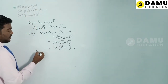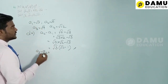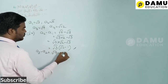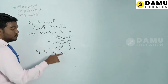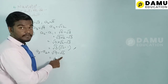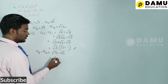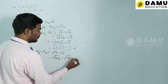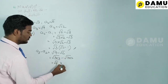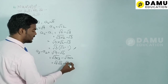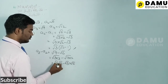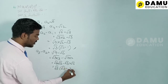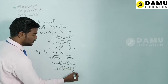Then a3 − a2 = √9 − √6 = √(3×3) − √(3×2) = √3 · √3 − √3 · √2. Taking √3 as common: √3(√3 − √2). So a3 − a2 = √3(√3 − √2).